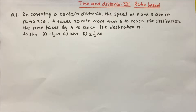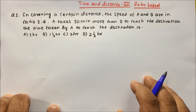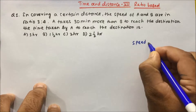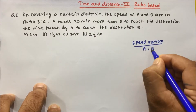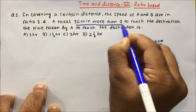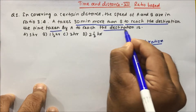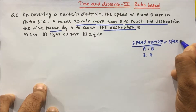Hi friends, this is time and distance video part 7, and here we are going to learn questions based on ratio. Question number one: in covering a certain distance, the speed of A and B are in ratio 3 is to 4. A takes 30 minutes more than B to reach the destination. Then the time taken by A to reach the destination is?